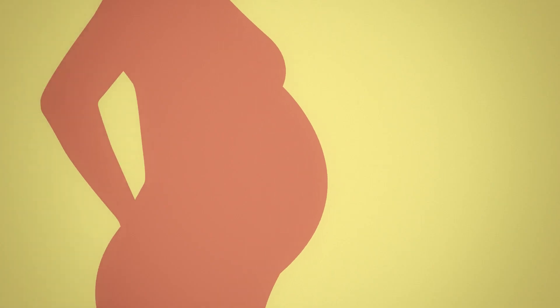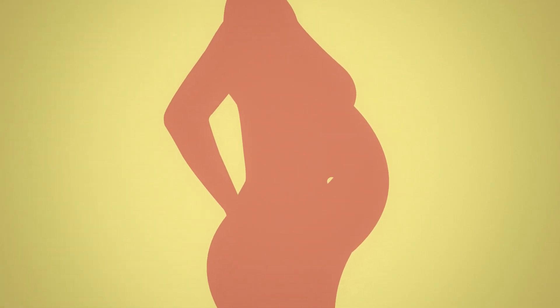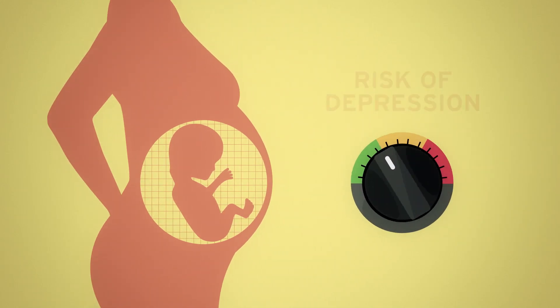Imagine you're soon to be a parent. Your doctor informs you that, if you wanted, you could choose certain features of your child's biology. You could choose how genetically prone to depression they will be, their levels of anxiety, jealousy, anger and even their pain threshold.